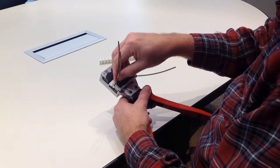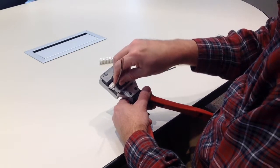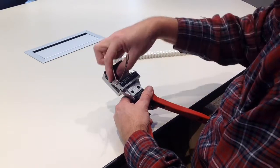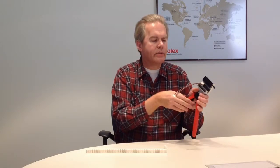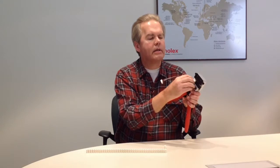And after I have all my wires loaded and in the comb, I can now cycle the hand tool and terminate the connector. At that point, I can raise the tooling, lift the wires out of the comb, and take the connector out.